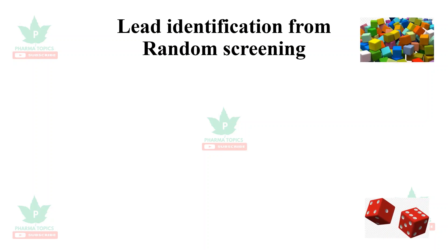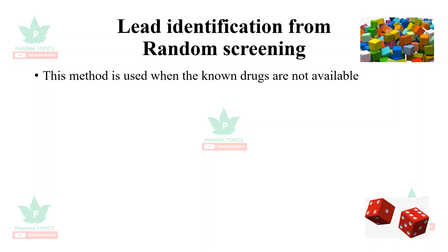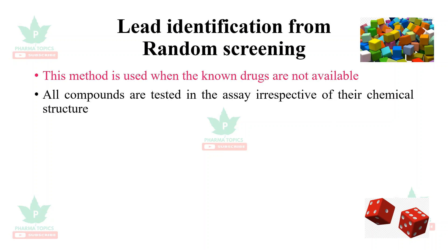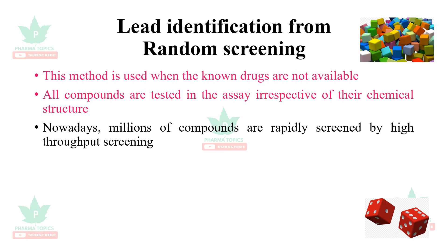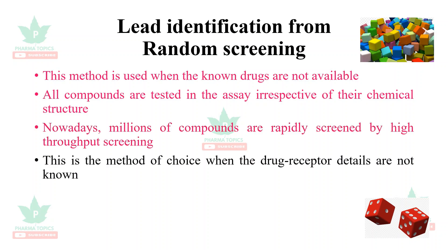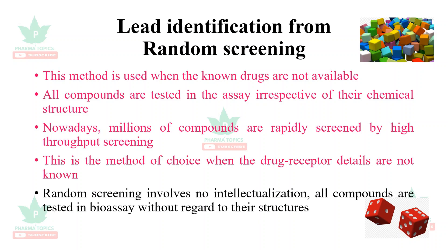Random screening means using a trial-and-error method, taking a list of molecules and testing them to arrive at a conclusion. This method is used when known drugs are not available. All compounds are tested in the assay irrespective of their chemical structure. Nowadays millions of compounds are rapidly screened by high throughput screening. This is the method of choice when drug-receptor details are not known.